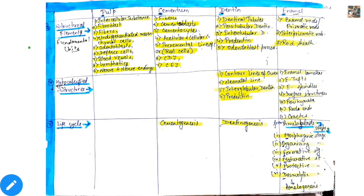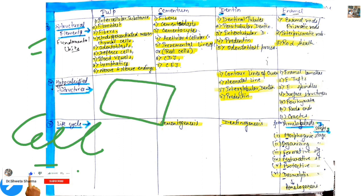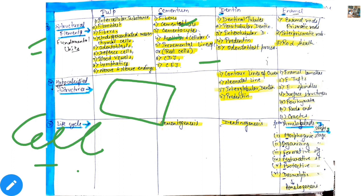What is the functional unit of tissue? That is the cell. So if we take a piece of dentine, what are the structural units or fundamental units? Those will be dentinal tubules, peritubular dentine, intertubular dentine, pre-dentine and odontoblastic process. We will discuss all of these further.